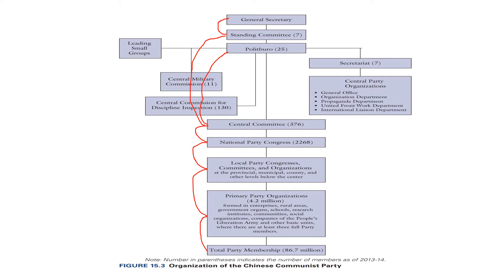There is centralization because all the decisions and policies are made at the top and implemented from top to bottom, following the top-down approach. So the Communist Party works on the principle of democratic centralization. Now let us look at the National Party Congress, from where the important organs of the CCP begin.